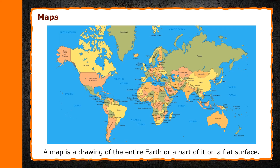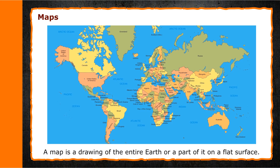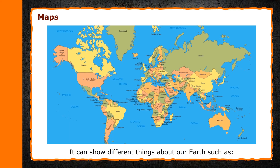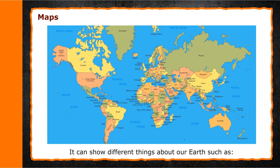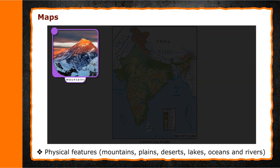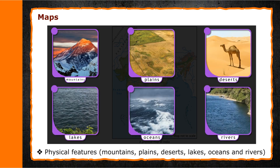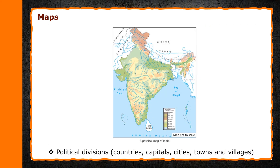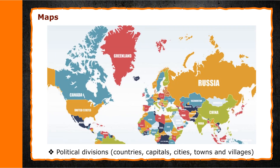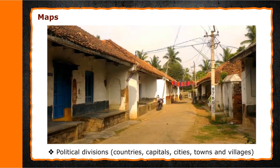Maps. A map is a drawing of the entire earth or a part of it on a flat surface. It can show different things about our earth, such as physical features — mountains, plains, deserts, lakes, oceans and rivers — as well as political divisions like countries, capitals, cities, towns and villages.